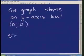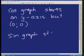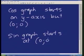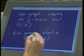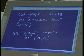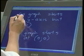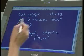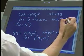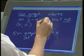Sin graph starts at zero zero. So as long as there's no shift when we have graphs, this here which I've just written up for you very quickly says that the cos graph will start on the y-axis but not zero zero. It will not start at zero zero.